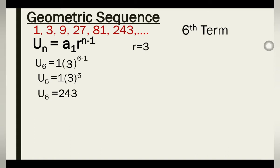3 to the power of 5 is 243, so a₆ = 243. That is the sixth term of this sequence. Whenever a sequence has a common ratio throughout, it's a geometric sequence. To find any term, you just need your first term and common ratio — you can find the 5th, 50th, or any term using this formula.